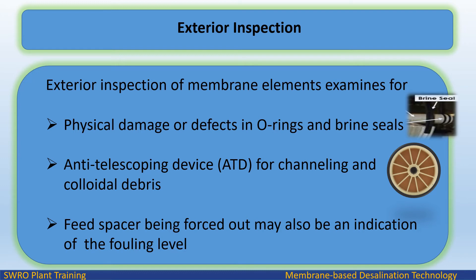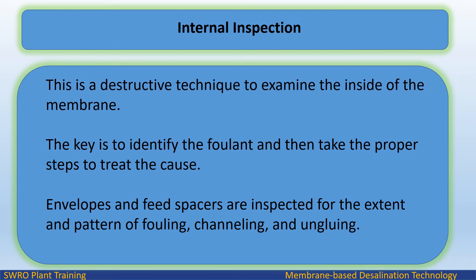Exterior inspection: The exterior inspection of membrane elements examines for physical damage or defects in O-rings and brine seals, the anti-telescoping device (ATD) for channeling and colloidal debris, and whether the feed spacer is being forced out, which may also be an indication of fouling level. Internal inspection: This is a destructive technique to examine the inside of the membrane. The key is to identify the foulant and then take the proper steps to treat the cause. Membrane envelopes and feed spacers are inspected for the extent and pattern of fouling, channeling, and ungluing.